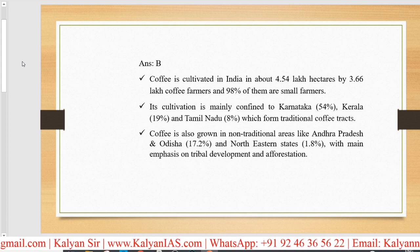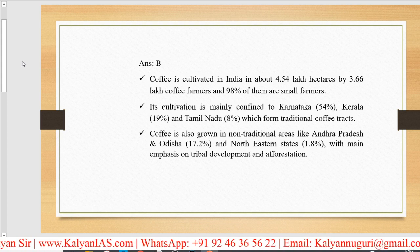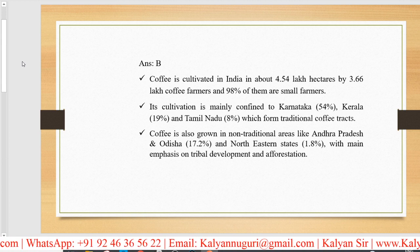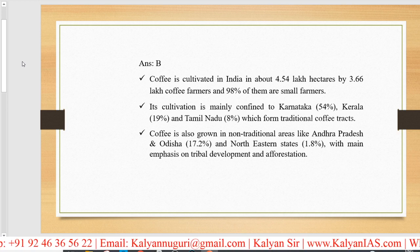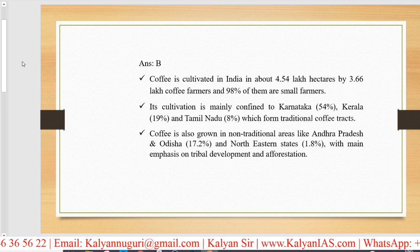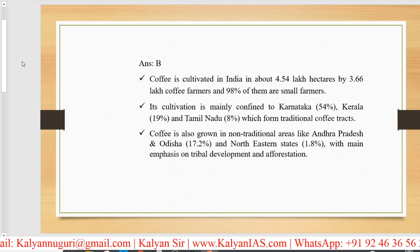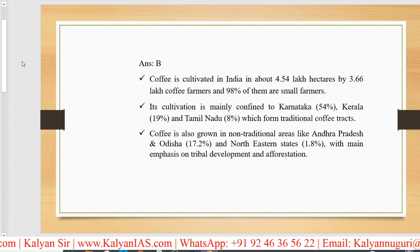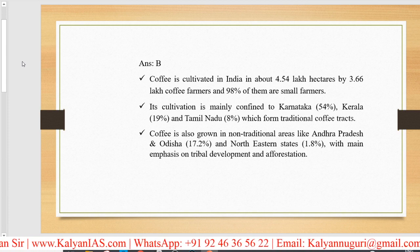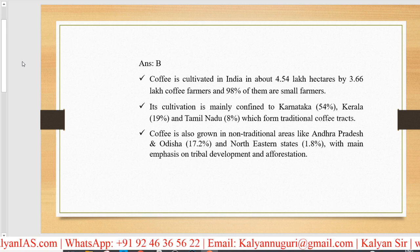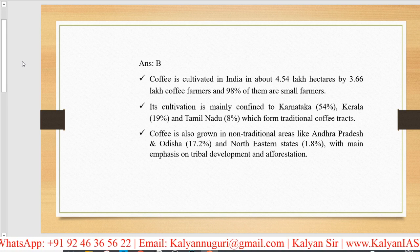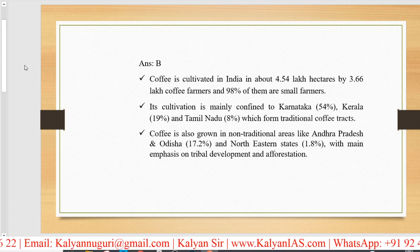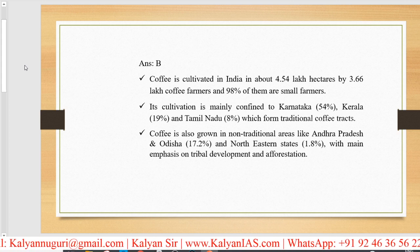Coffee cultivation is mainly confined to Karnataka — out of what is produced in India, 54% is produced in Karnataka. Kerala is followed by Tamil Nadu. Coffee is also grown in non-traditional areas like Andhra Pradesh and Odisha, with main emphasis on tribal development and afforestation. Karnataka produces 54%, the highest in India.